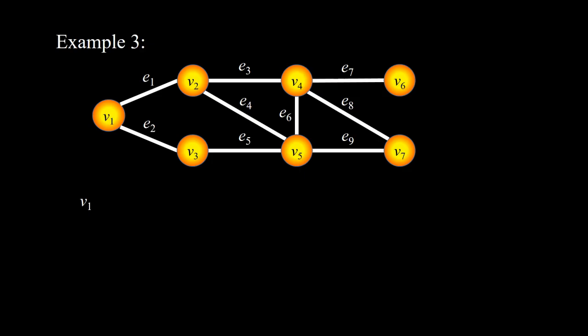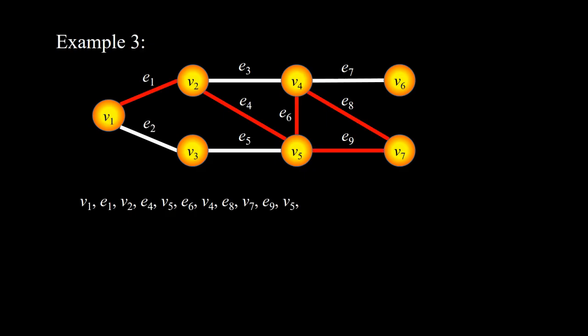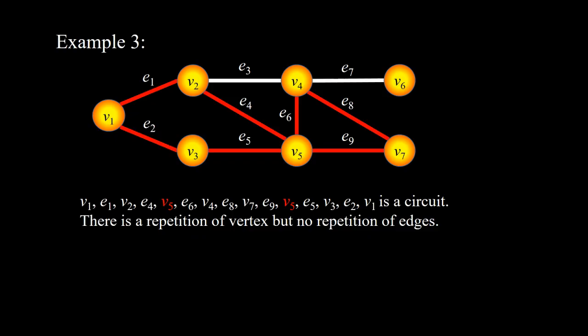Starting from V1, then E1, V2, E4, V5, E8, V7, E9, V5, E5, V3, and finally E2, V1. This is an example of a V1-V1 circuit. The vertex V5 is repeated but there is no edge repeated.